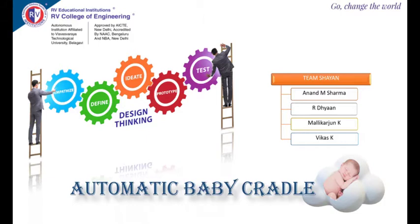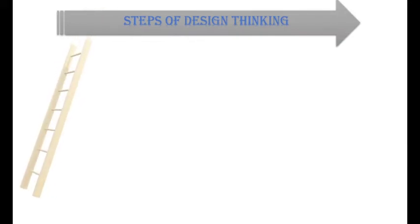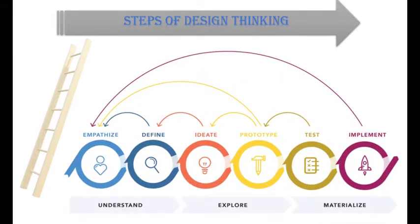Let me explain what the design thinking process actually is. Design thinking is an iterative process in which we seek to understand the user and redefine the problem in an attempt to identify alternative strategies and solutions. It provides a solution-based approach to solving problems. The design thinking process involves five major phases: Empathize, Define, Ideate, Prototype, and Testing.